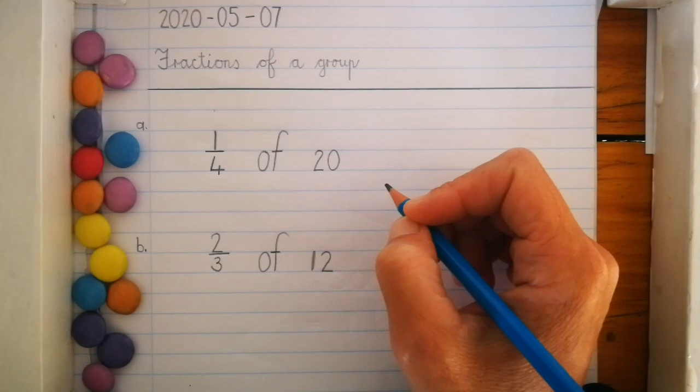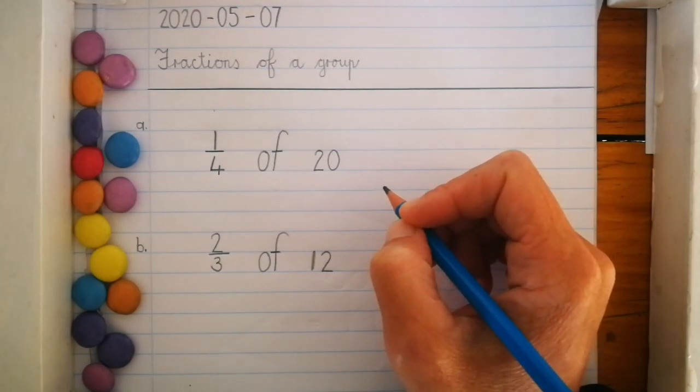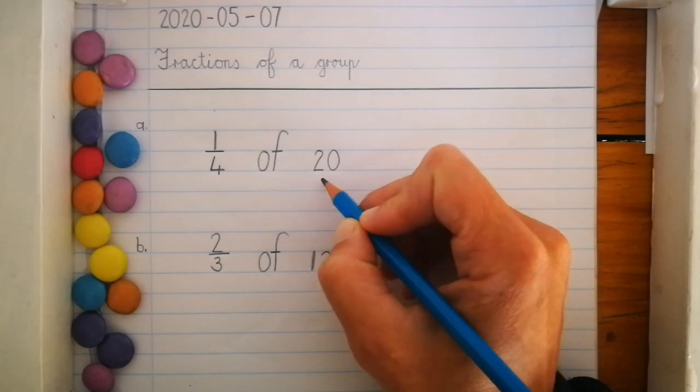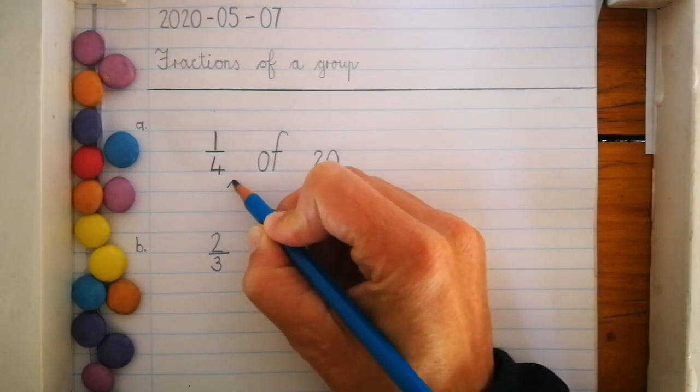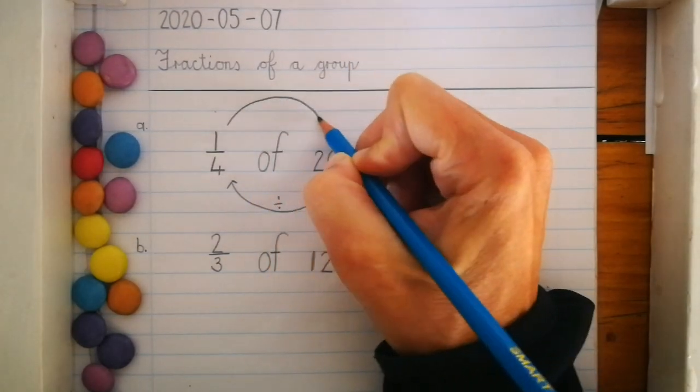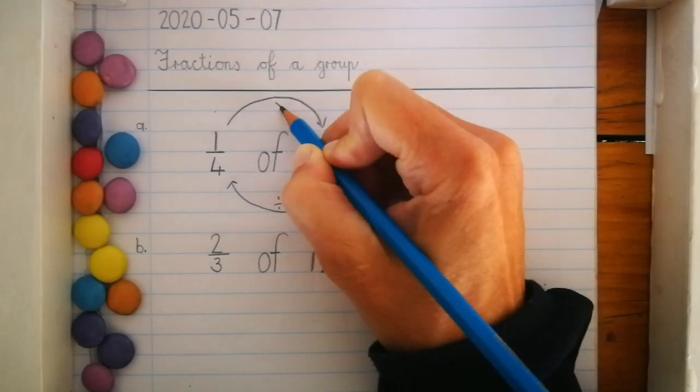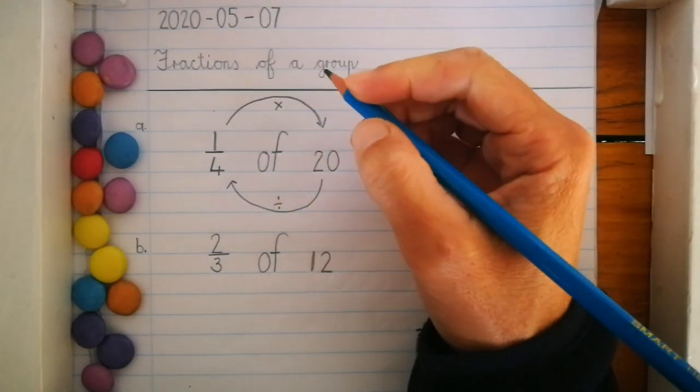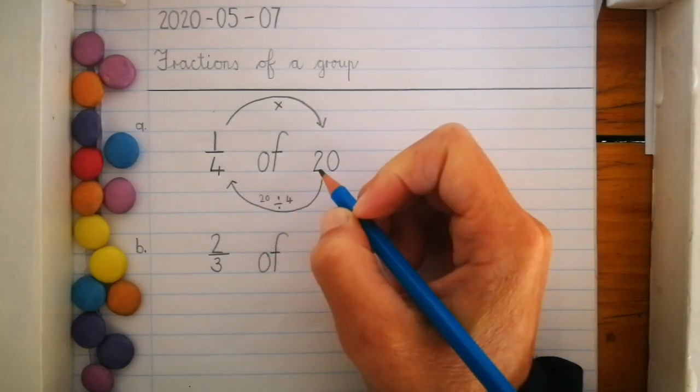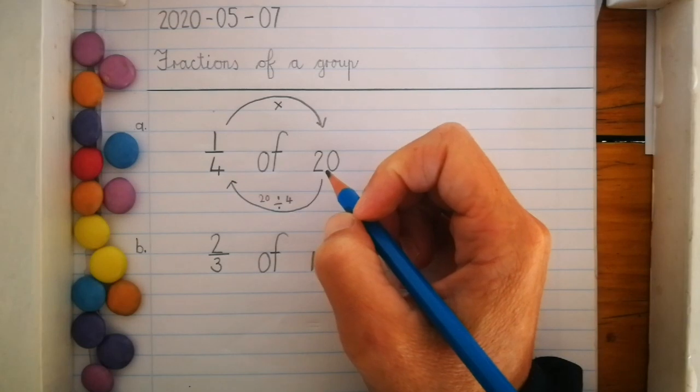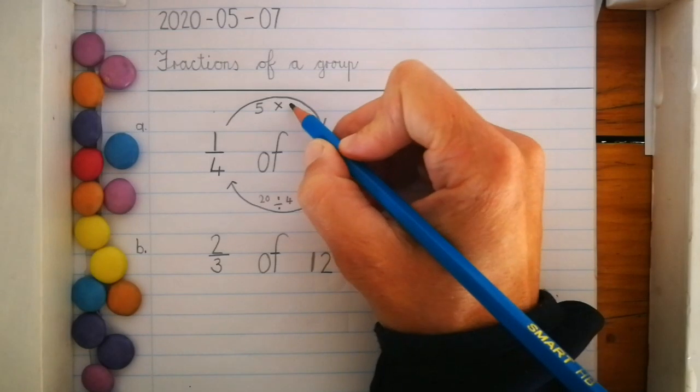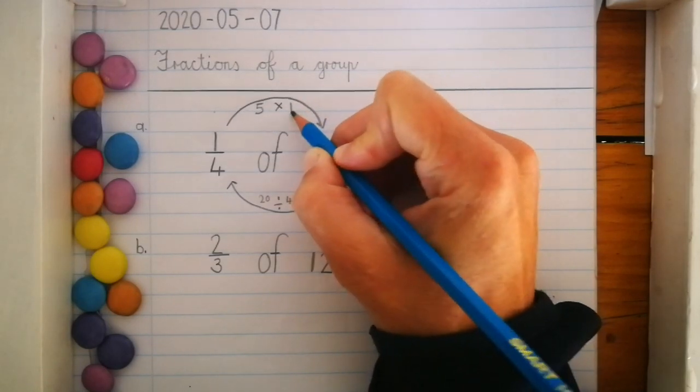Let's try a few more problems. A quarter of 20. I'm going to make my smile and I'm dividing. I'm going to make my rainbow and times. 20 divided by 4 equals 5. Put the 5 at the top and times it by 1. Where did I get this 1?